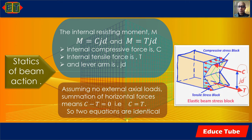If the moments are summed about an axis through the point of application of the compressive force C, moment equilibrium of the free body gives M equals C·jd. Similarly, summing moments about the point of application of the tensile force gives M equals T·jd. Since C equals T, these two equations are identical.